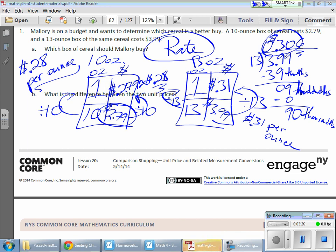And it says, which box of cereal should Mallory buy? You should definitely buy the 10-ounce box of cereal because it's 28 cents per ounce versus 31 cents per ounce. And what is the difference between the two unit prices? Well, if I take my 31 cents and I subtract my 28 cents, I get 3 cents. So there is the difference between the two prices. So that's the kind of thing we did today.